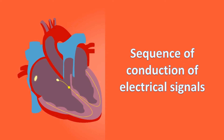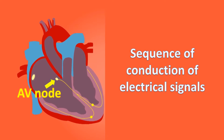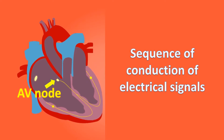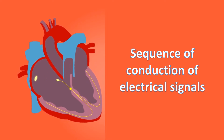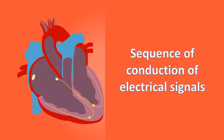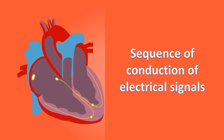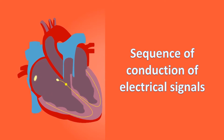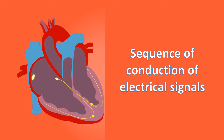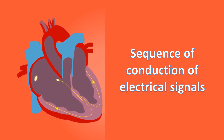Most of the PR interval delay is produced in the atrioventricular or AV node at the junction between the upper and lower chambers. This delay allows the complete emptying of the upper chambers before the lower chambers start contracting, giving a booster filling for the lower chambers apart from the passive filling which occurs when the lower chambers relax after a contraction.